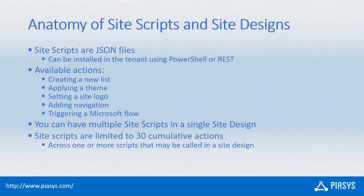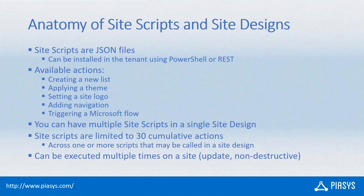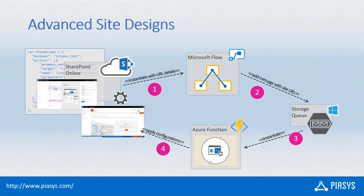Whenever you want to do something not included in the out-of-the-box actions, you can use a Flow to trigger external actions. You can have multiple scripts in a single site design, and in a script you can have up to 30 cumulative actions. You can also execute a site design multiple times on the same site — it will update rather than destructively overwrite, keeping the target site in sync with the design.